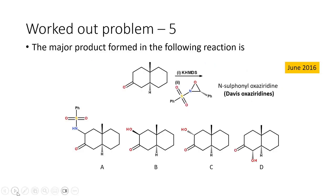Let us move on to the next problem, which appeared in June 2016. The major product formed in the following reaction — we have a bicyclic ketone as starting material, which reacts in step one with KHMDS (a strong base) and also with an oxaziridine as the second substrate. We have four different products as options and we have to find out which product will be formed.